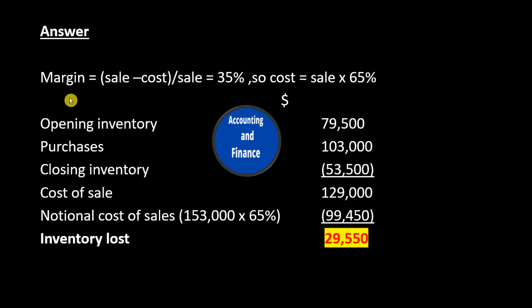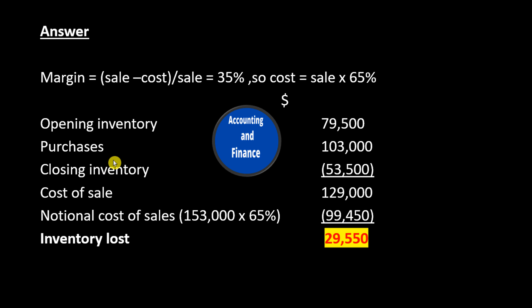Answer: Margin equals sales minus cost divided by sales equals 35%, so cost equals sales times 65%. Opening inventory $79,500 plus Purchases $103,000 minus Closing inventory $53,500 equals Cost of sales $129,000.